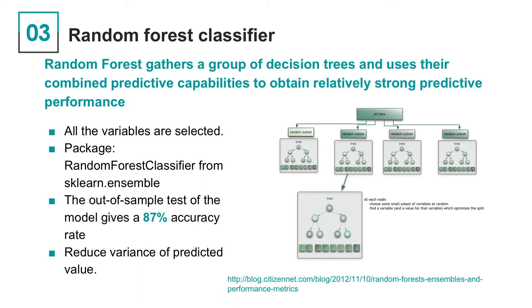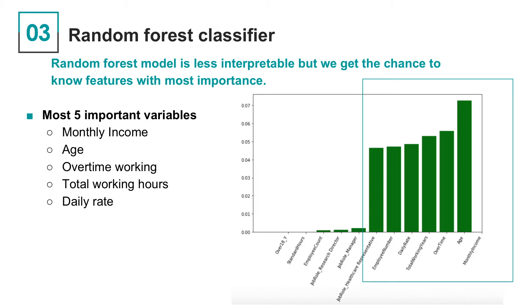We try to extend our models beyond class. The first method we apply is random forest. Random forest gathers a group of decision trees and uses their combined predictive capacities to obtain relatively strong predictive performance. For each random subset, we select random samples from the training set with replacement and build a classification tree on each random sample. Each tree can split on only a random subset of variables, which effectively reduces variance of predicted values. All variables are selected, and the predicting accuracy is 87%. The five most important variables are monthly income, age, overtime working, total working hours, and daily rate.